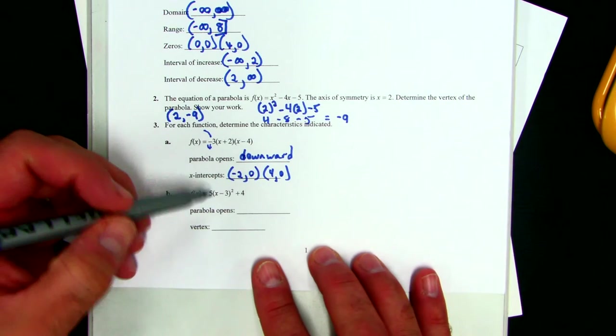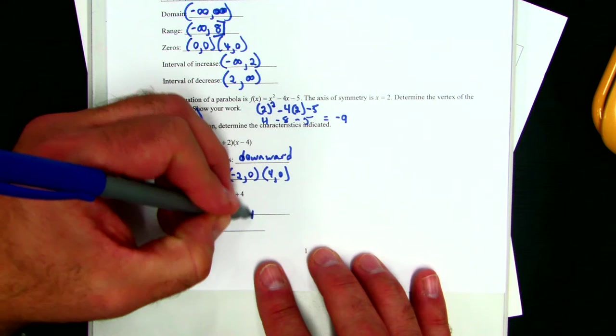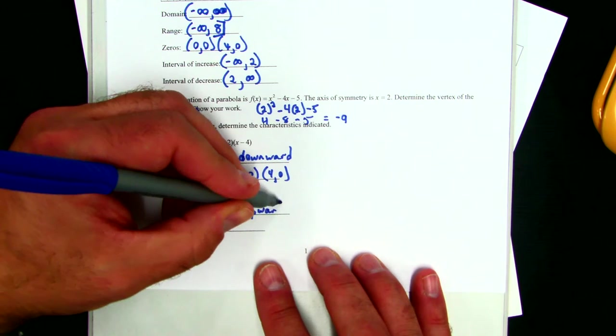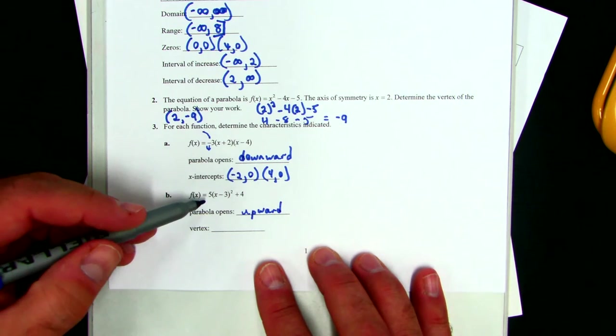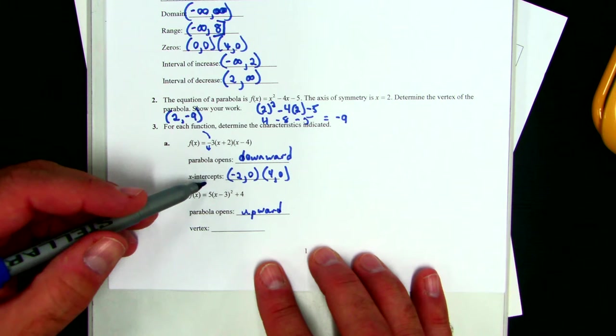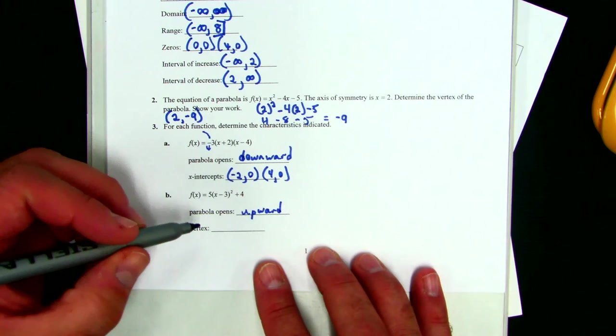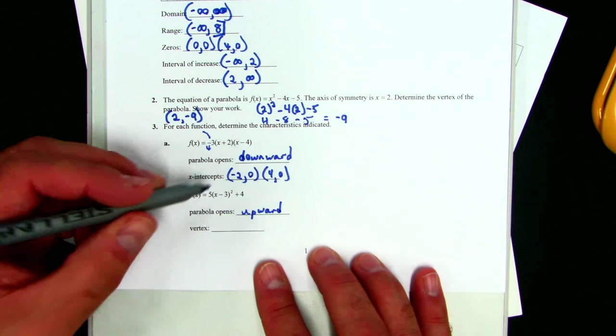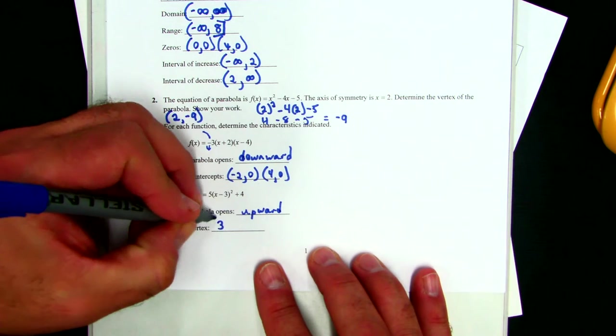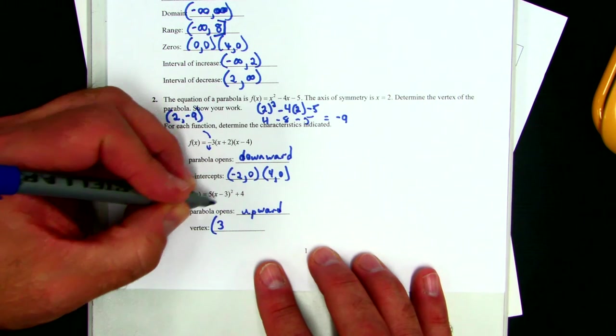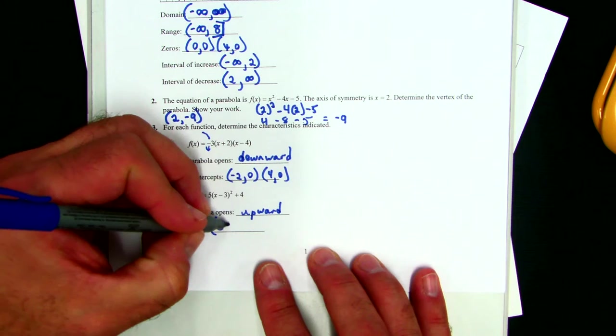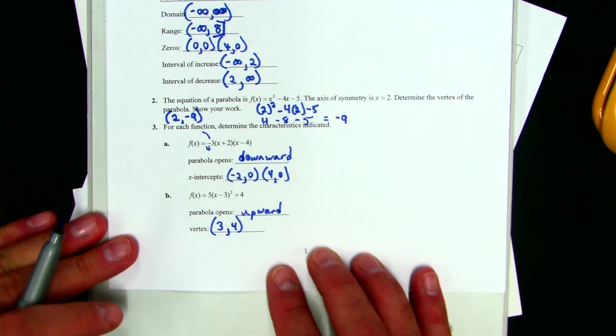Last but not least, this parabola opens upward. And you also should know, not only does it open upward, but it is a contraction. That's what we learned about on Friday. And the vertex, it's in vertex form, is positive 3 because it's the opposite. It's in parentheses. And positive 4.